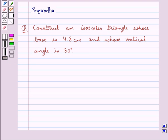Hello and welcome to the session. In this session we discuss the following question which says construct an isosceles triangle whose base is 4.8 cm and whose vertical angle is 80 degrees.